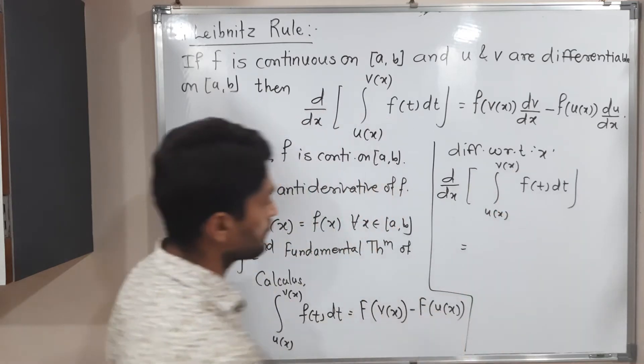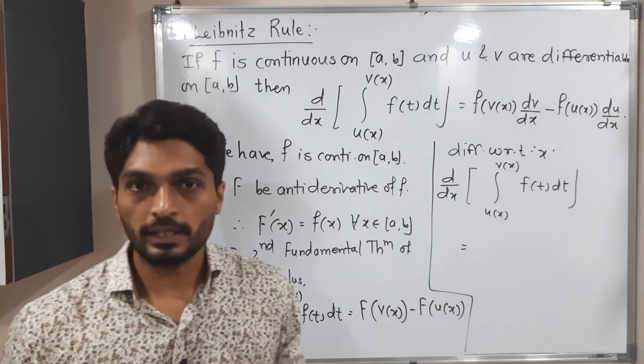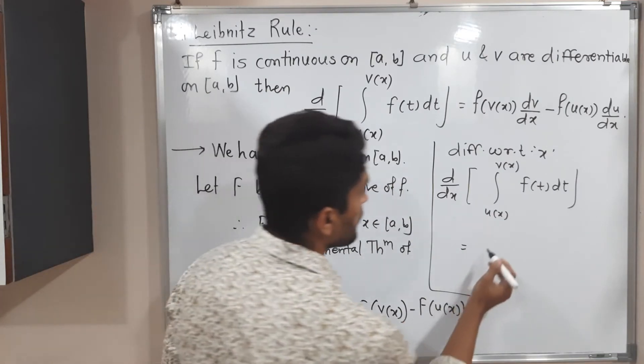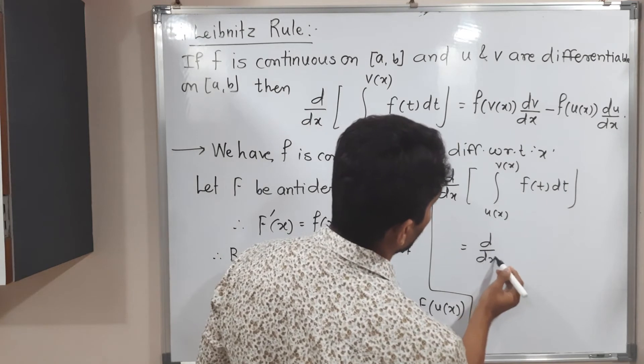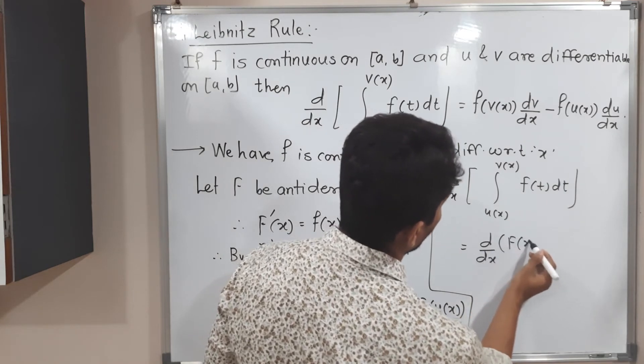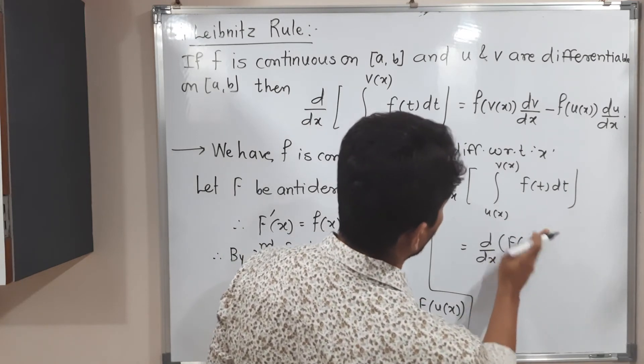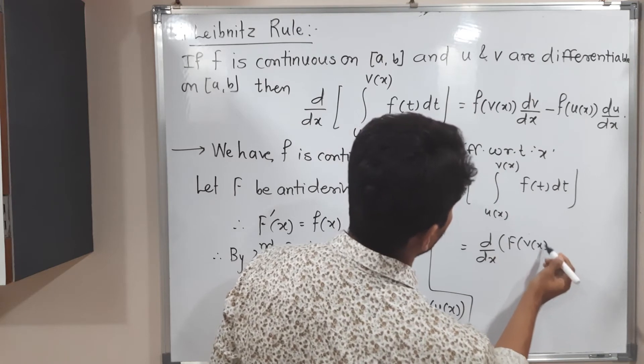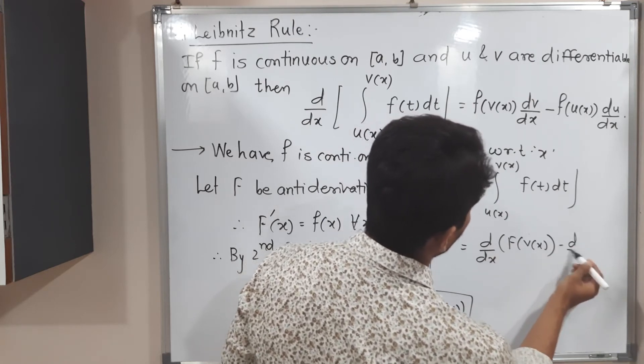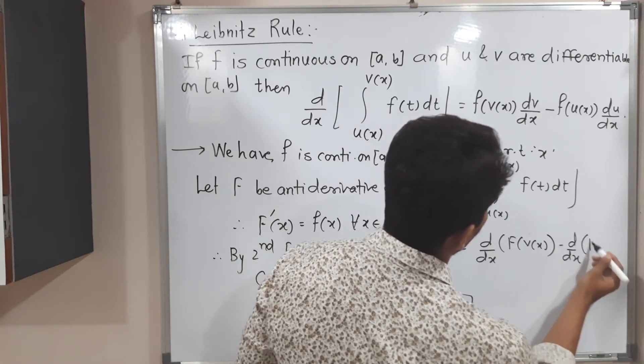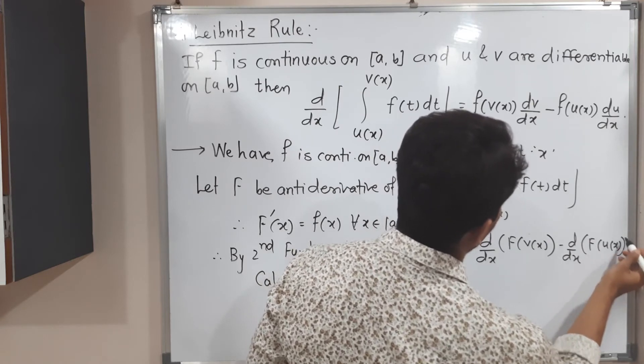Derivative of integration u of x to v of x f of t dt is equal to minus sign is there. So we can take separate derivatives. Derivative of F of x, sorry F of v of x, F of v of x minus derivative of F of u of x.